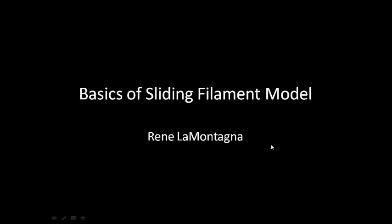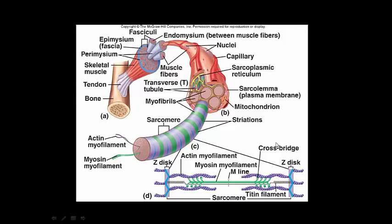In this video we're going to talk about the basics of the sliding filament model, which is the process in which a muscle cell contracts, and we're also going to cover some stuff about motor units and motor recruitment. You also have a concept map on the Blackboard site in which you can fill in the steps that I'm going to go through to make sure that you understand the order they go in.